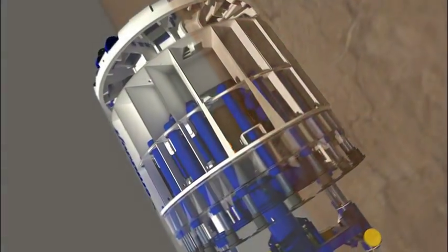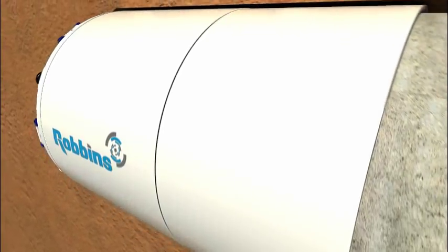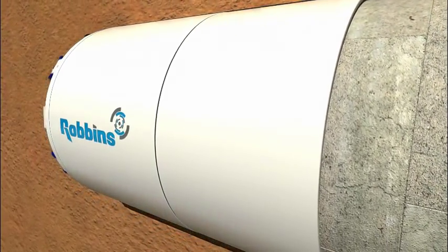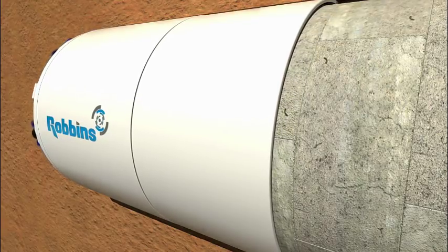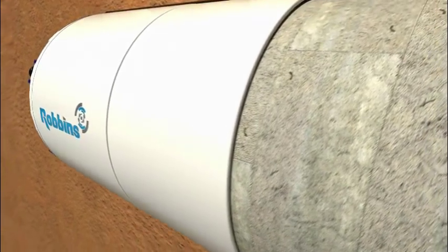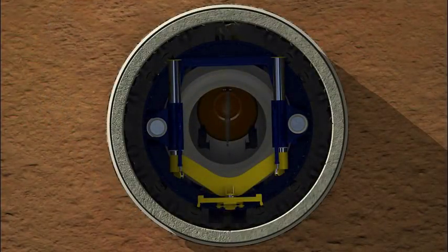Proper support of the tunnel walls as the TBM advances is critical to the safe construction of a tunnel heading. As the machine bores, temporary gaps form naturally between the soft ground and the tunnel lining. The boring process also creates a risk of settlement and upheaval at the surface. To stabilize the soil and fill gaps, the process of backfilling is used.